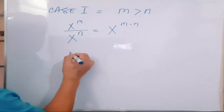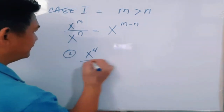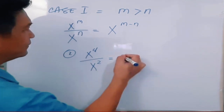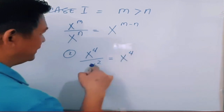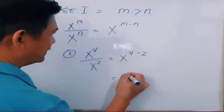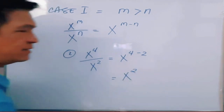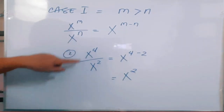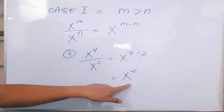Now let's solve example number 2. When you have x raised to the fourth power over x squared, it is equal to x raised to 4 minus 2. That will be equal to x raised to 2. So x raised to the fourth power divided by x squared is equal to x squared.